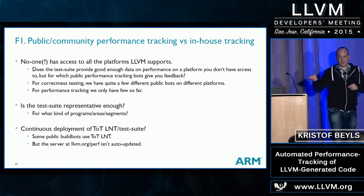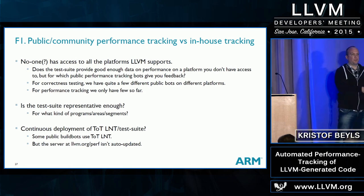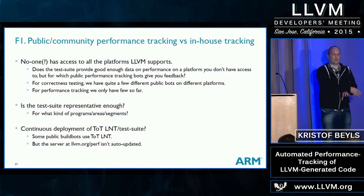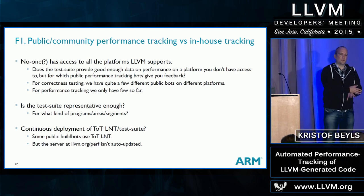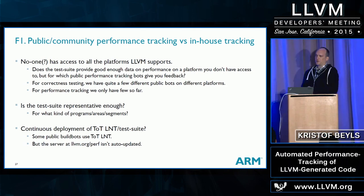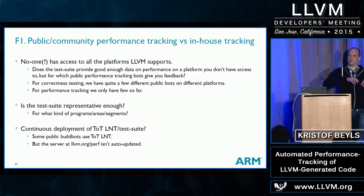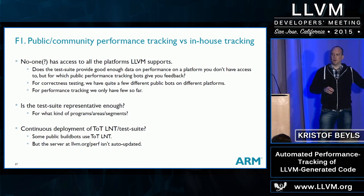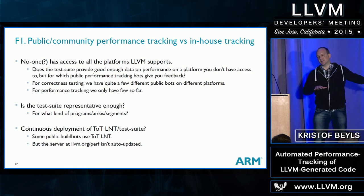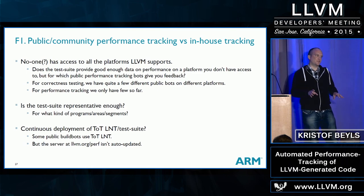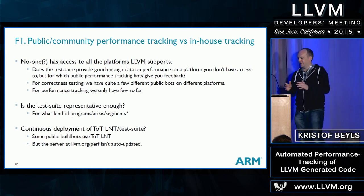The test suite helps because it can be run on public boards, so if you commit something you can see the effect of your patch on a platform you don't have access to. But the question arises: is the test suite really representative enough of the real world? It would be great to scientifically measure how representative this test suite is for compiler optimization work compared to other software suites. I don't know of anyone having tried to solve that problem.